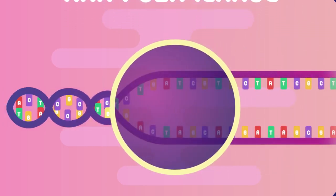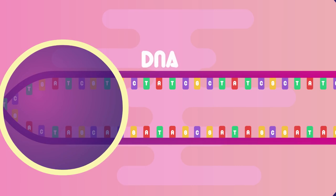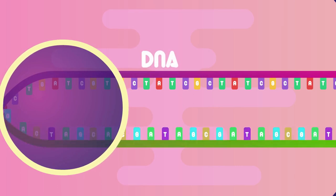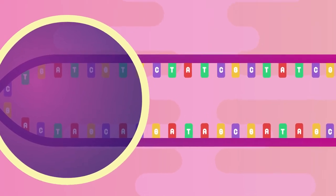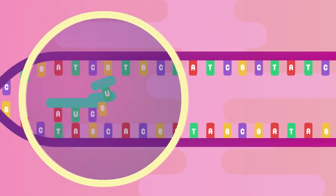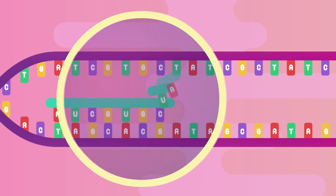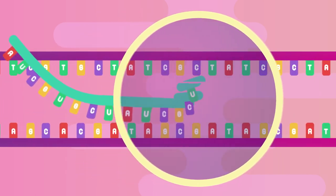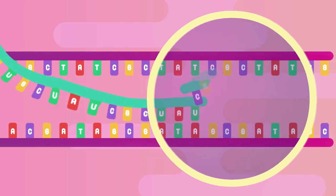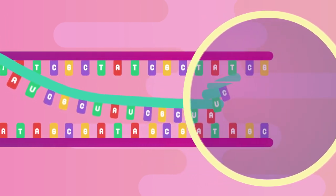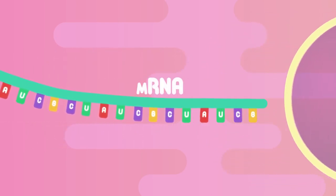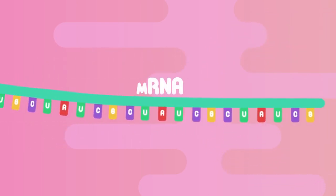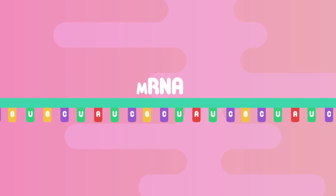Let's have a look at how all this works. In the nucleus, the enzyme RNA polymerase unwinds and unzips the two strands of DNA that contain the protein-making gene. Only one of these strands is going to be replicated. Complementary RNA nucleotides base pair with the chosen strand, and RNA polymerase then binds the RNA nucleotides together, making a new RNA strand. This is called messenger RNA, or mRNA, and this whole process inside the nucleus is called transcription.